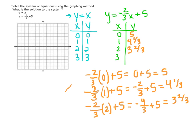And last, when x equals 3, we have negative 2 thirds times 3 plus 5. This equals negative 6 thirds plus 5. When simplifying that, that equals 3. So when x equals 3, y equals 3.